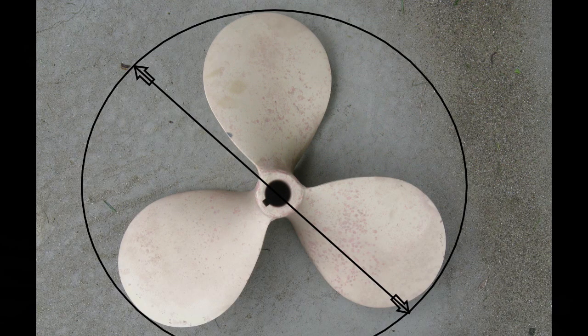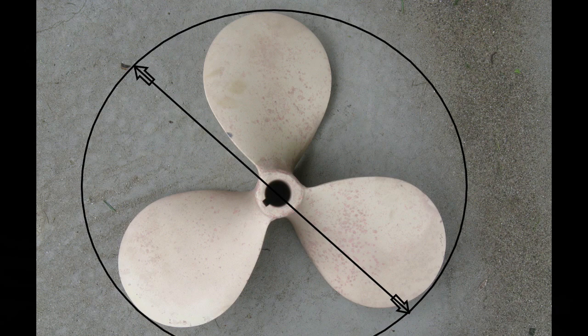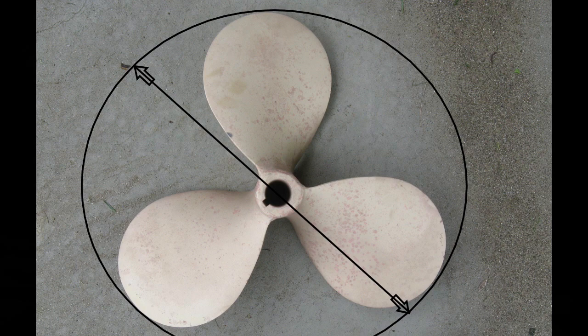Another important parameter is the diameter of the propeller. In this picture you can see I've drawn a circle around the outside of the propeller just touching the blades. And the diameter of that circle is the diameter of the propeller.